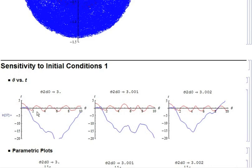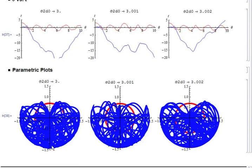So for theta 2 dot equal to 3, equal to 3.001, and 3.002, you can see that theta 2 behaves very, very differently. It's also kind of interesting to look at the parametric plots from the different initial conditions, and you can just see that it traces out different paths as a function of time.